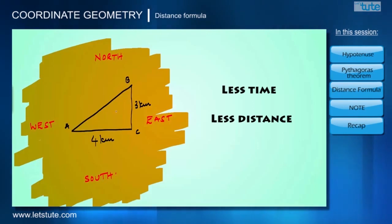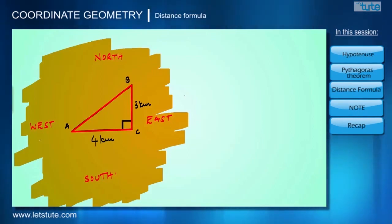If you notice this, it is forming a right angle triangle with right angle at C, and the side opposite to right angle is called the hypotenuse. That is nothing but, in our case, distance between A and B.